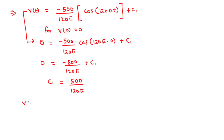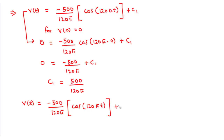Therefore, v of t equals negative 500 over 120 pi times cosine 120 pi t, plus 500 over 120 pi. This is the formula we will use to find the voltage across the capacitor at t equals one millisecond and t equals five milliseconds. At t equals one millisecond, which is 0.001 seconds, we have v of t equal to negative 500 over 120 pi times cosine of 120 pi times 0.001, plus 500 over 120 pi. Make sure your calculator is in radian mode. Evaluating this gives 0.09314 volts, or equivalently 93.14 millivolts.